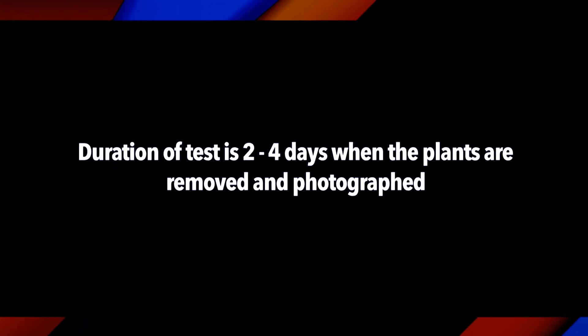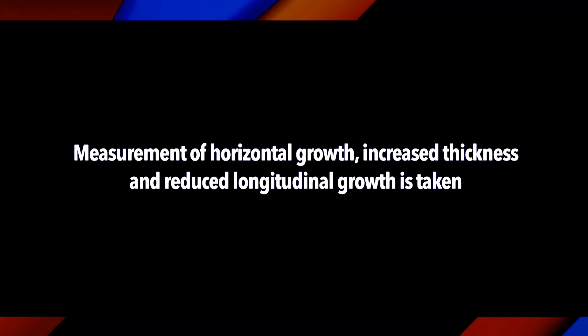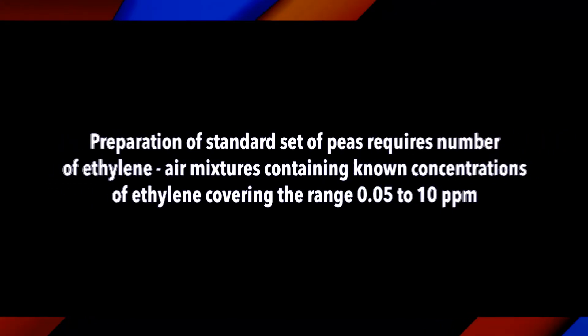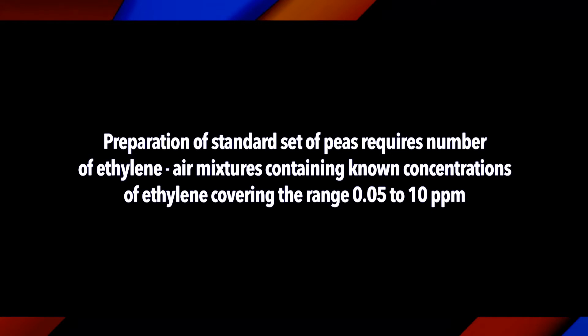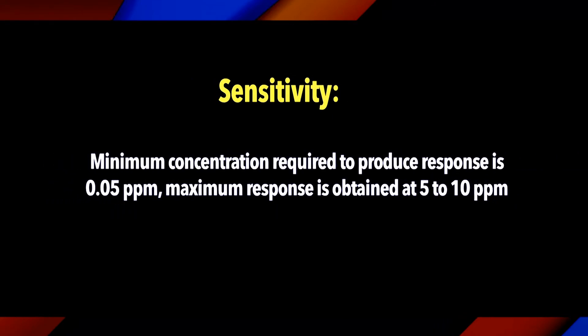For the epinastic response of tomato petioles, the duration of the test is 2 to 4 days, when the plants are removed and photographed. Measurement of horizontal growth, increased thickness, and reduced longitudinal growth is taken into account. A series of plants treated with known concentrations of ethylene under similar conditions are prepared and photographed; by comparison with the unknown, an estimate of the ethylene concentration is obtained. The standard set requires a number of ethylene-air mixtures containing known concentrations of ethylene covering the range between 0.05 to 10 parts per million.